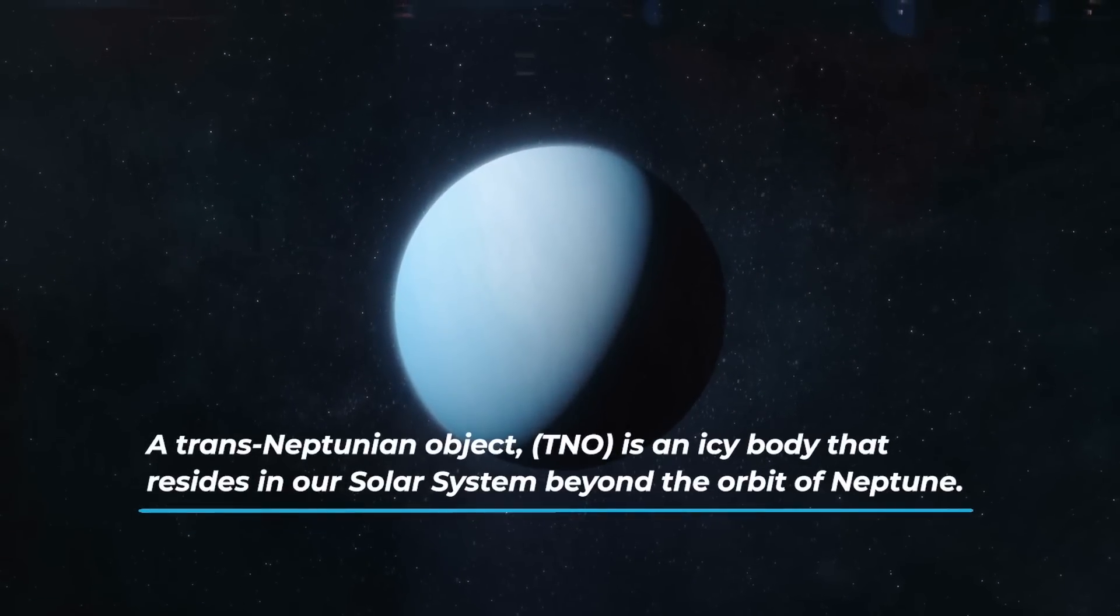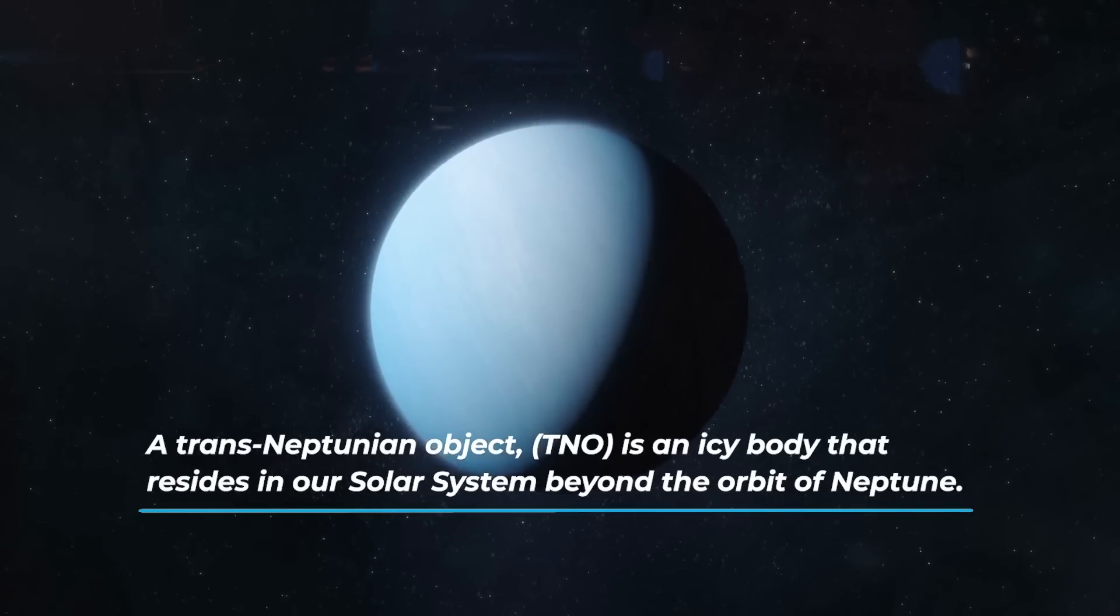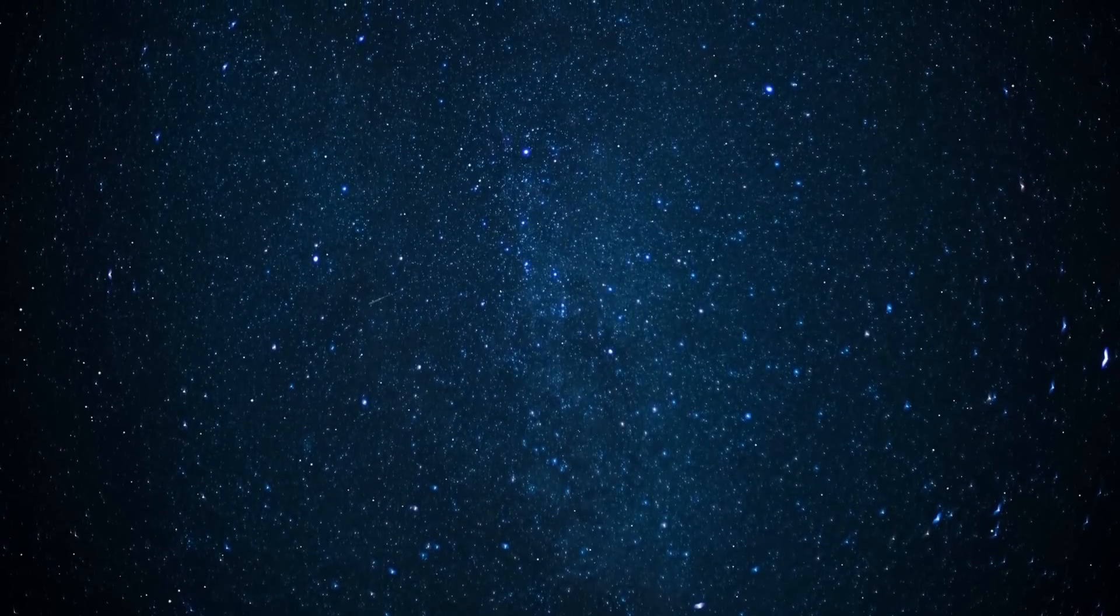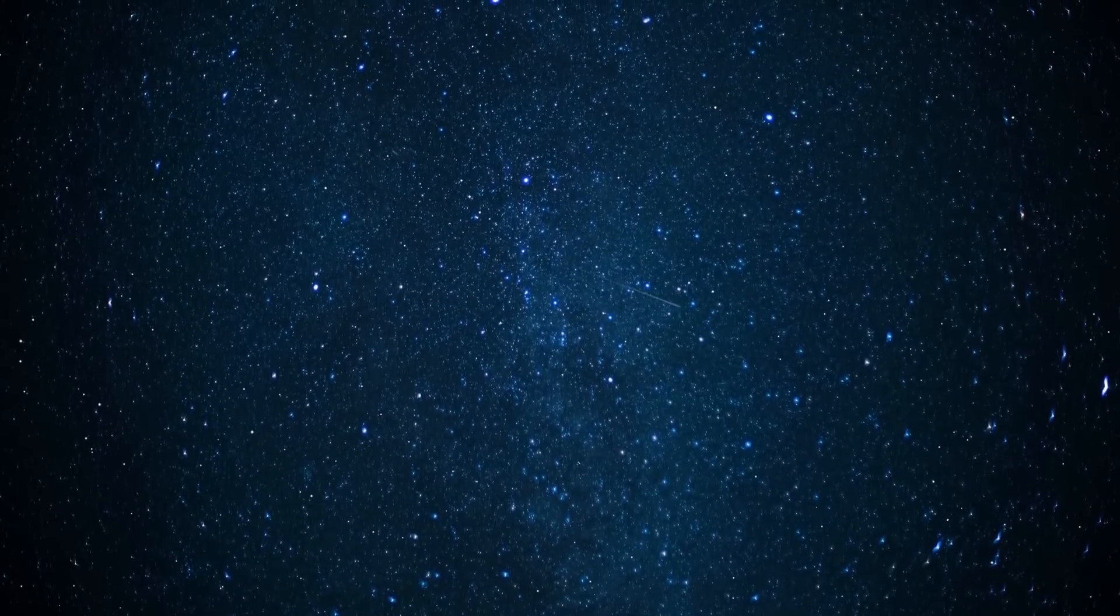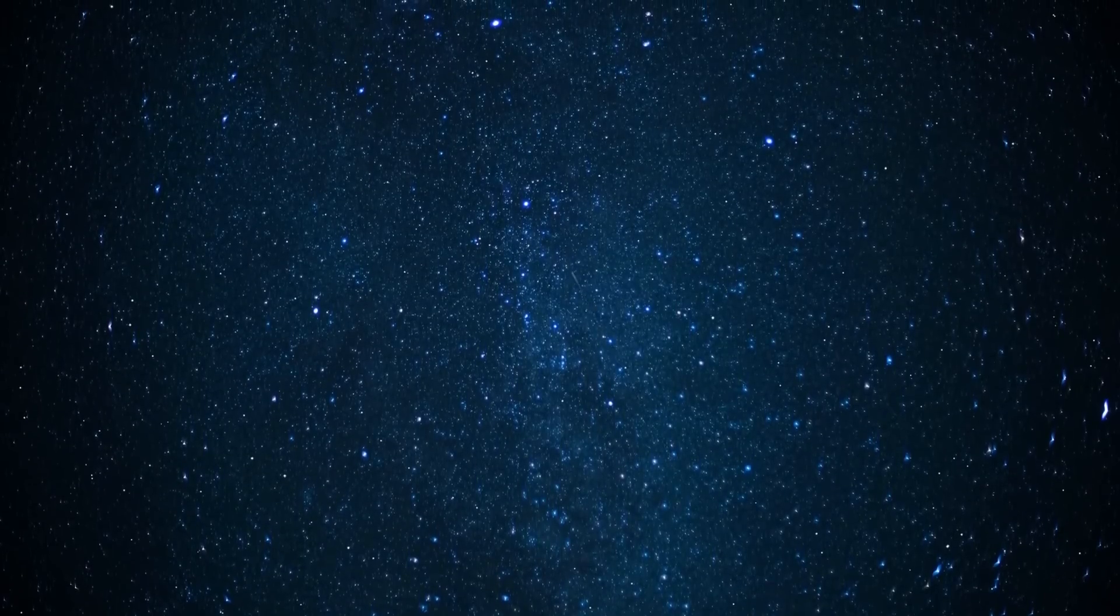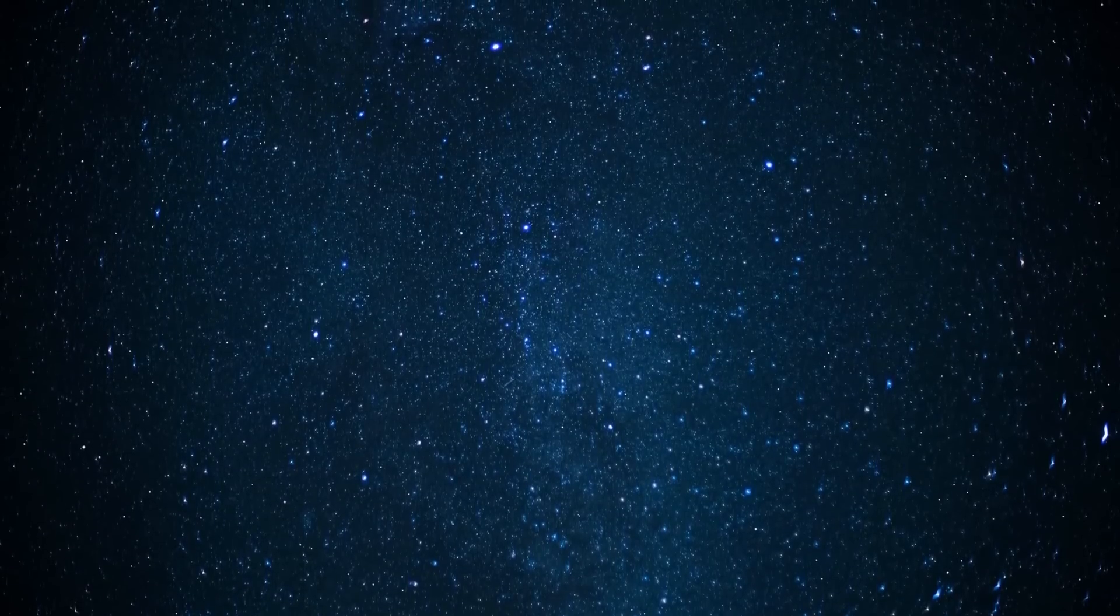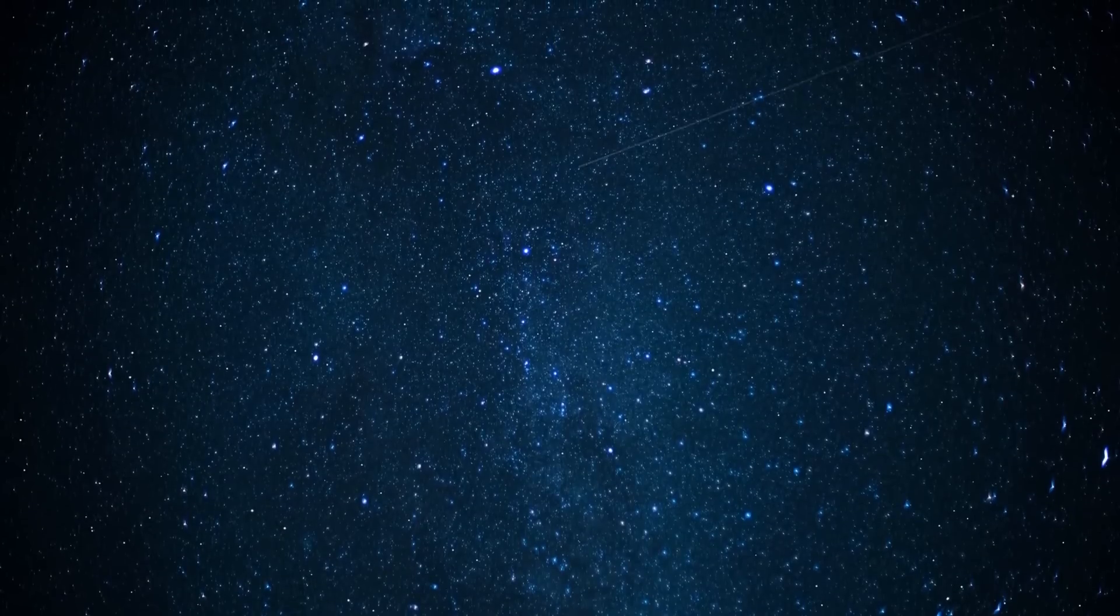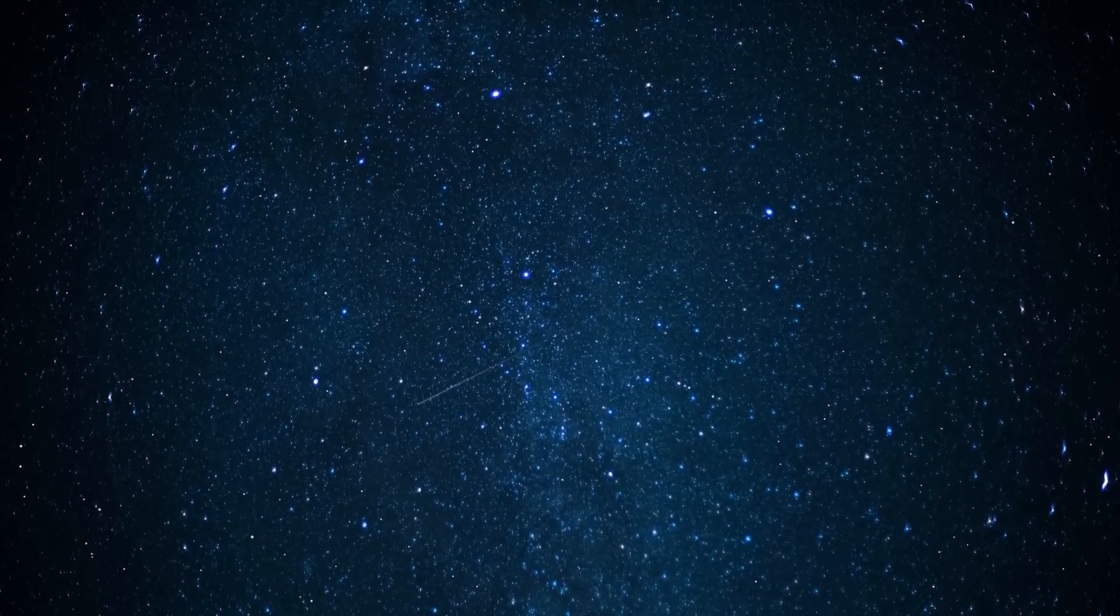A trans-Neptunian object, or TNO, is an icy body that resides in our solar system beyond the orbit of Neptune. Bernardinelli and Bernstein spotted the comet using the National Center for Supercomputing Applications and Fermi lab, identifying 800 TNOs from archival survey data. At first, the image of the comet didn't show a classic tail between 2014 and 2018. But an independent observation in 2021, after the comet's existence was made public, showed the comet now has a coma of gas and dust surrounding it. Bingo!